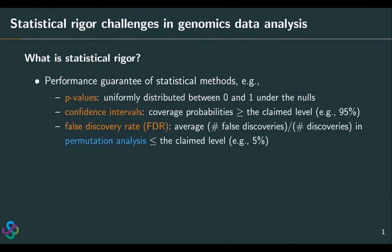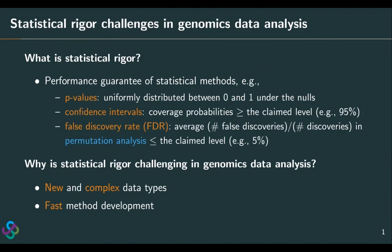In genomics, these three criteria are often used, but their performance guarantees are rarely checked. I think there are two reasons. The first is that genomics data types are new and complex, so we cannot directly apply classical or textbook statistical methods to these new data. The second reason is the fast-moving field — we have to develop methods quickly to keep pace, which leaves very little room and time to think about the rigor of our statistical methods.